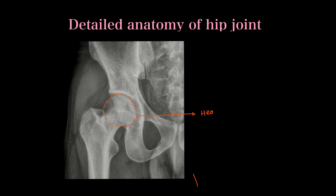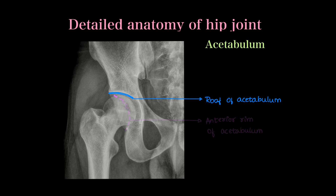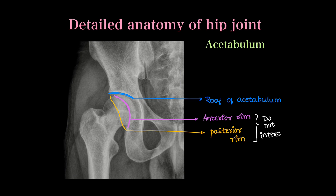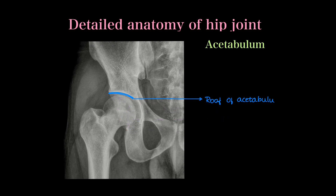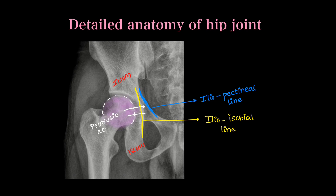Coming to detailed anatomy of the hip joint: this is the outline of the head of femur. The line joining the greater and lesser trochanter is the intertrochanteric line — fractures here are called intertrochanteric fractures. The acetabulum has a roof, an anterior rim, and a posterior rim visible on AP x-ray — these two lines should not intersect. Medially is the acetabular fossa. The ilio-ischial line joins the ilium and ischial bones, and the iliopectineal line runs along the pelvic inlet. If the head of femur crosses the ilio-ischial line, it is called protrusio acetabuli.